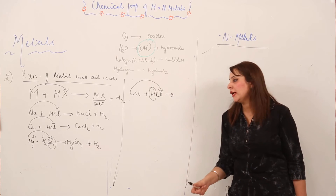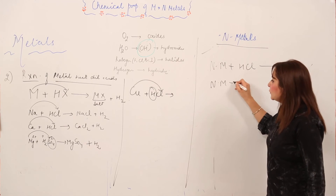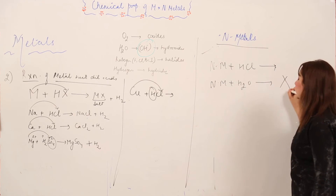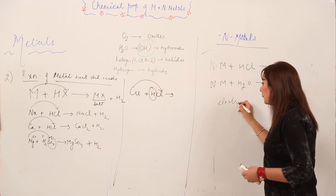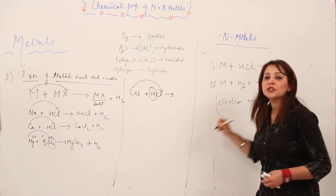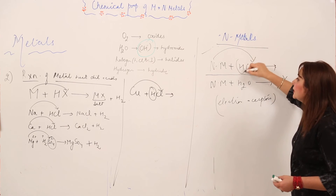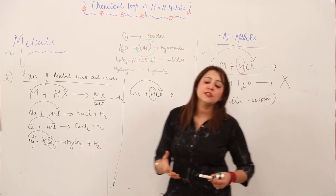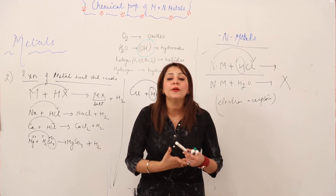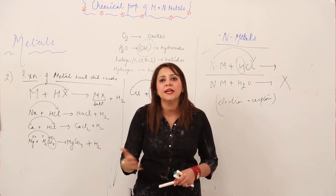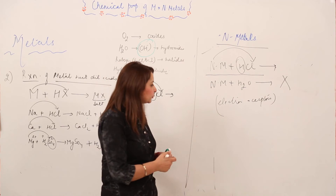This is the reaction of metals with dilute acids. Now, with non-metals — when non-metals react with dilute acid, again it needs to displace hydrogen. Non-metals are electron acceptors; they cannot donate electrons, so they cannot reduce hydrogen, they cannot displace hydrogen. So no reaction takes place. This is the reason that non-metals do not react with dilute acid.